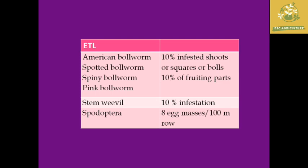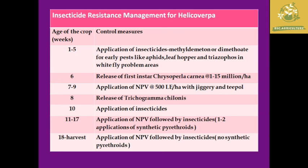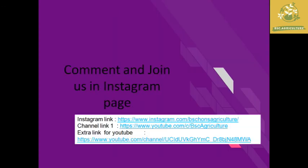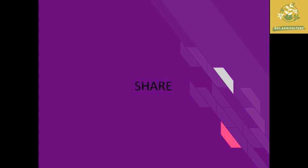Economic threshold levels for boll worms, stem weevil, and other insects are provided, along with an insect-resistant management summary for Helicoverpa and an integrated pest management module for cotton from TNAU. Lecture notes are available in the description. Watch Part 2 of cotton pests in the next video. If you liked the video, please like, share, subscribe to BSc Agriculture, and hit the bell icon for regular updates.